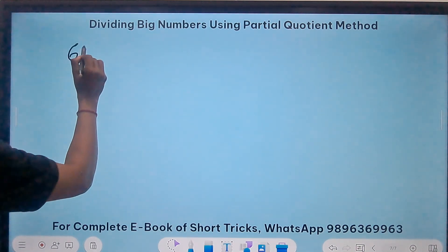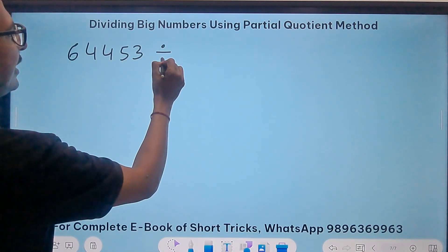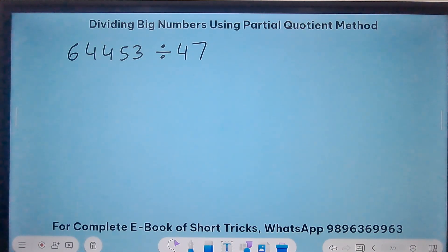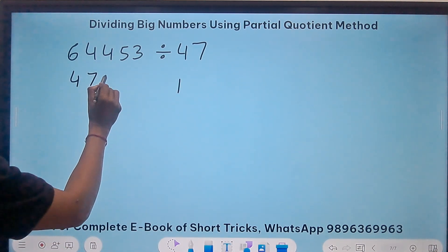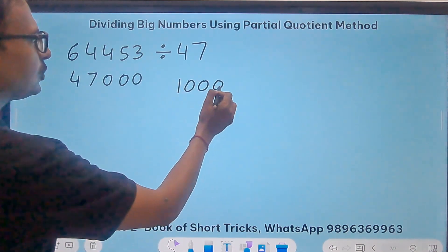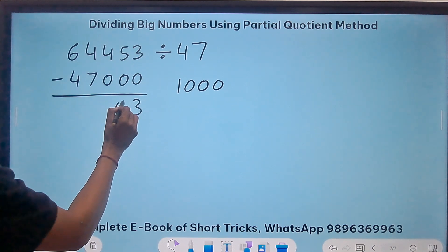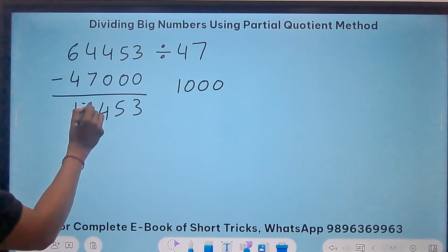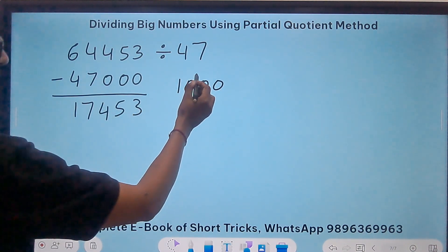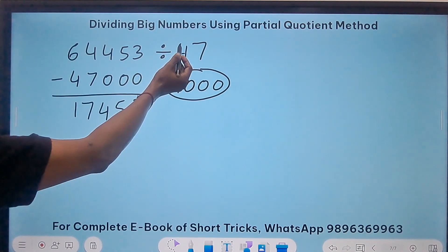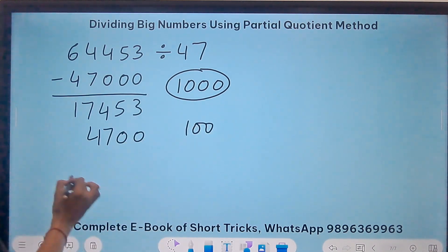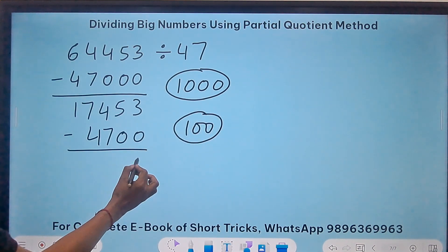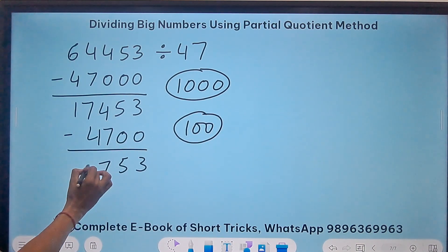I'll show you one more. Suppose you have 64453 and need to divide by 47. If I write 47 and 3 zeros, I'm doing 1000 times. 47 into 1000 is 47000. Let's get rid of this much, so we have 17453. I got the first partial quotient which is 1000. Now 47 times 100 is 4700. Subtract and I get 12753.